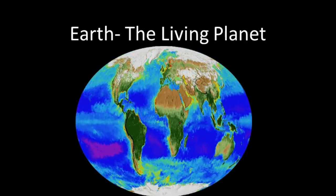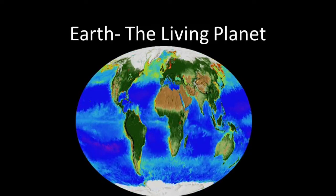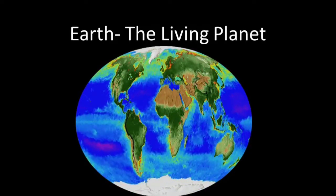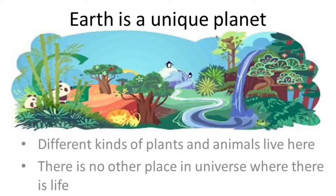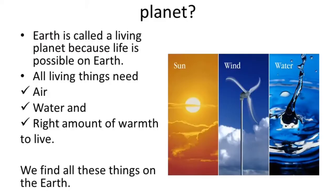Good morning, students. In today's video, we will learn about earth, the living planet. Earth is a unique planet. Different kinds of plants and animals live here. There is no other place in the universe where there is life. Why is earth called a unique or a living planet? Earth is called a living planet because life is possible on earth.